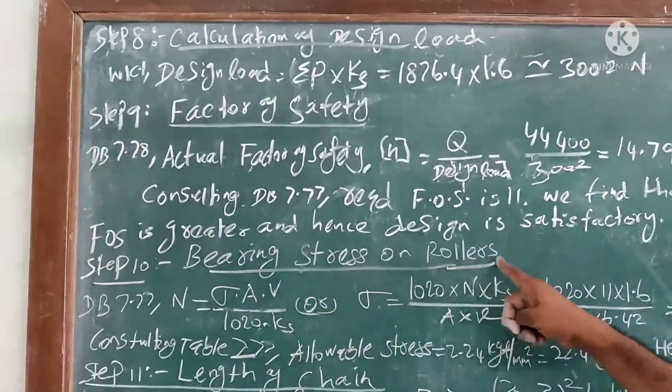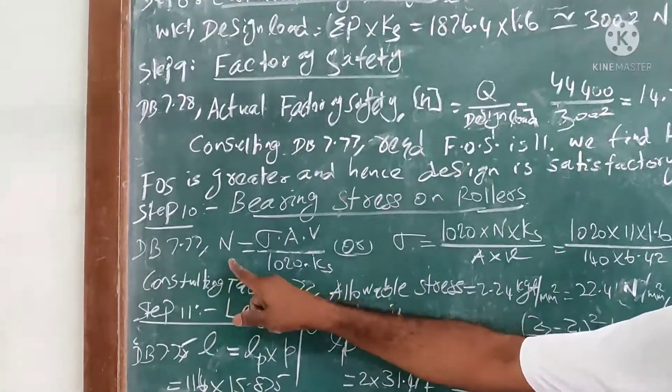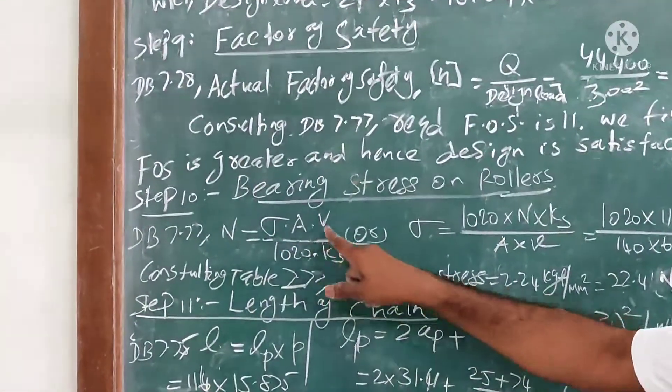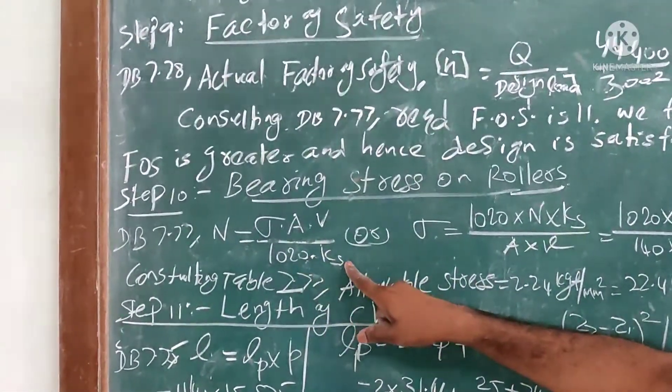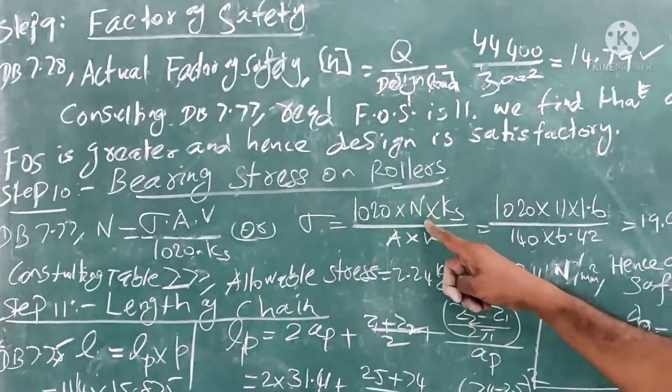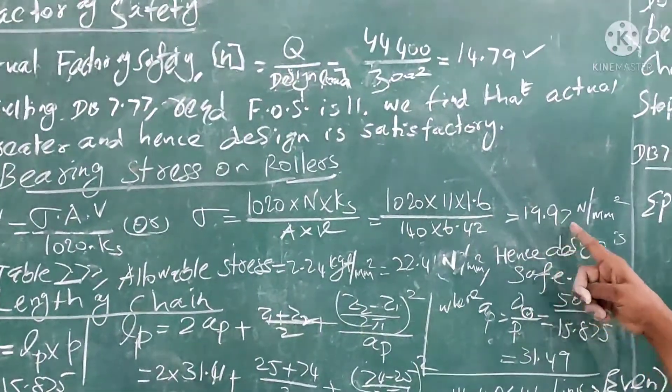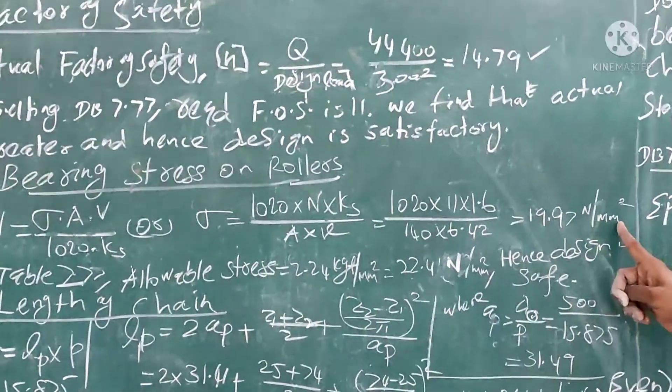Step number 10: bearing stress on rollers. We know the formula in 7.77, N = σAV/(1020 × Ks), or σ = (1020 × N × Ks)/(A × V). Substitute the values, you get 19.97 N/mm².